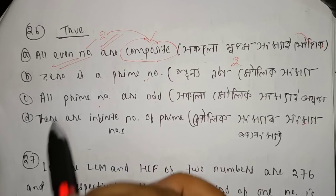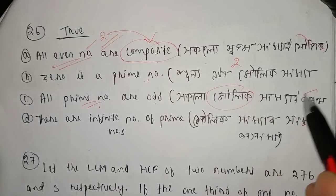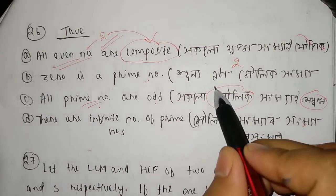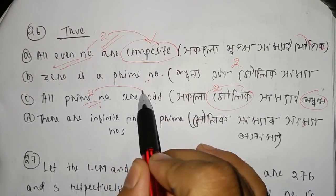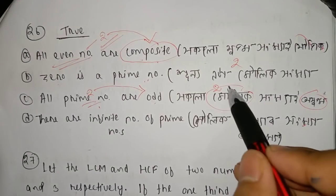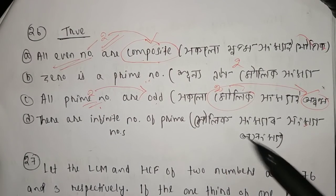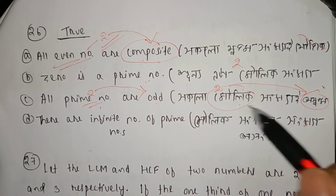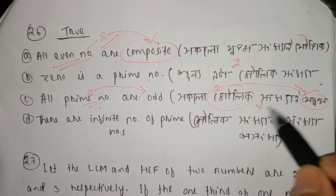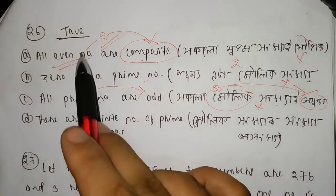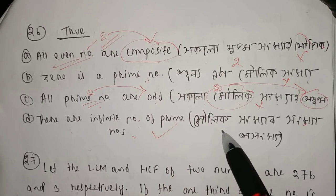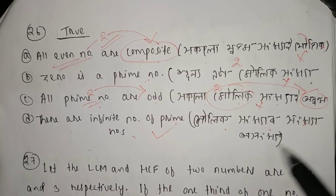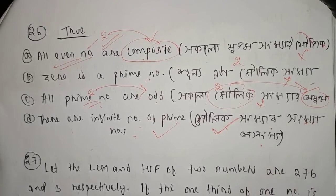Third point: which of the following statements about prime numbers is correct? There are infinite prime numbers. All primes except 2 are odd. 1 is not a prime number. So the answer is option D.